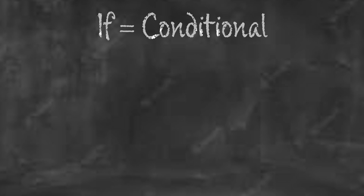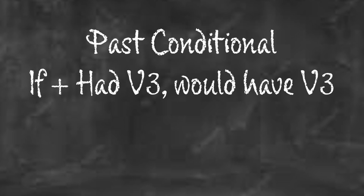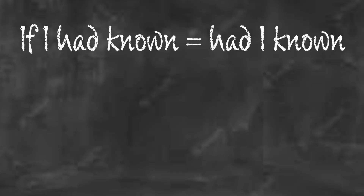Normally when we think about past conditional, it's if plus past perfect — or had plus the V3 — and then would have V3. When I say V3, I mean past participle. So past conditional: if plus past perfect, and then would have plus the V3. For this sentence, if I had known is the same thing as had I known.